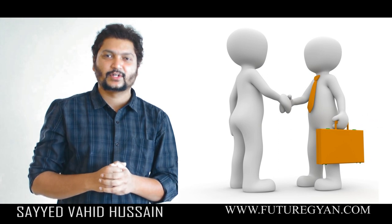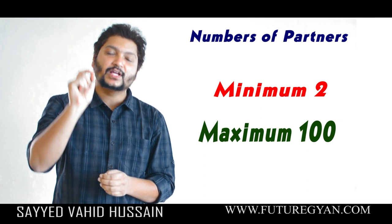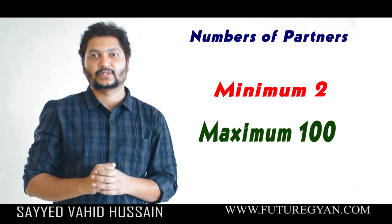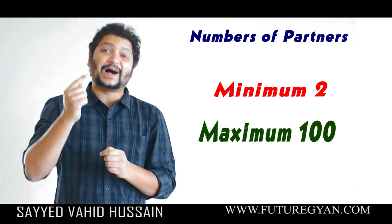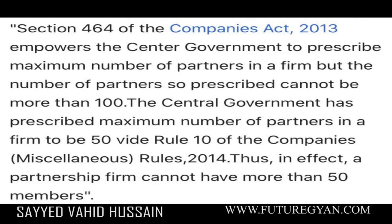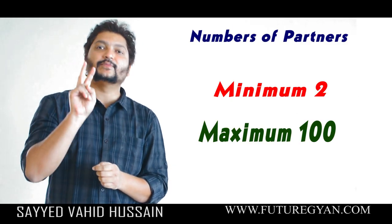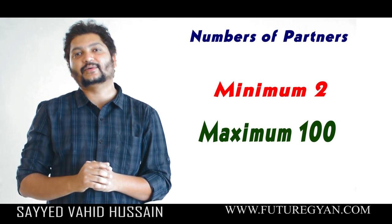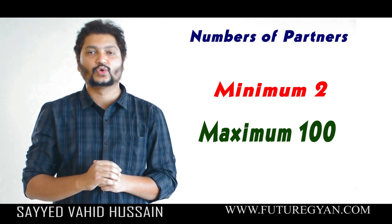There will be a minimum of two partners and a maximum of 100 partners. The limit of 100 partners is not defined by the Partnership Act — it is given in the Indian Companies Act 2013, which is a different act that we will study in Company Accounts. So, minimum 2 partners and maximum 100 partners according to the Companies Act 2013.